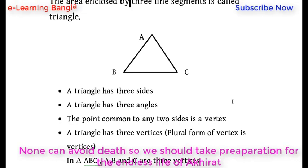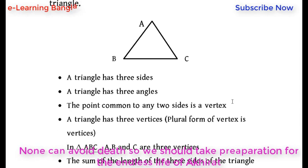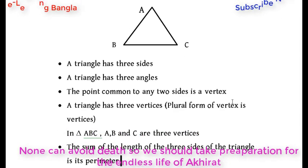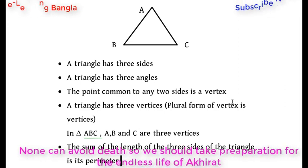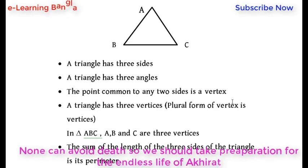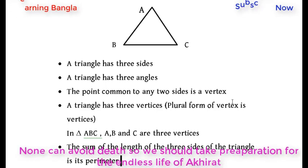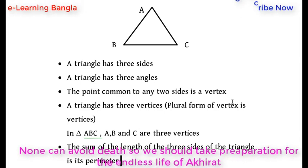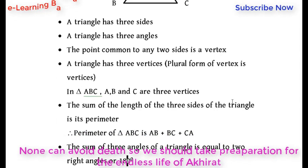The triangle has three vertices. In triangle ABC, A, B, and C are the three vertices. The sum of the lengths of the three sides of the triangle is its perimeter. For example, one side is 3 cm, another is 5 cm, and another is 7 cm or 9 cm.